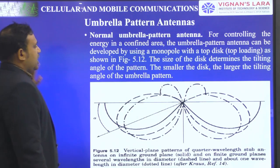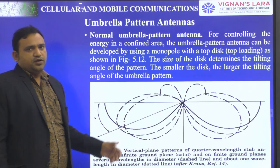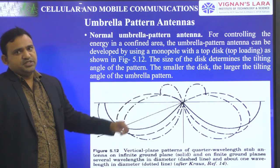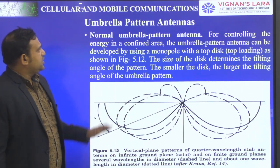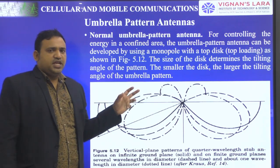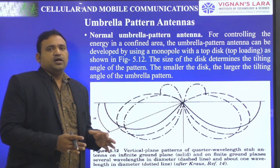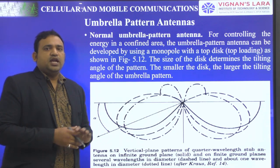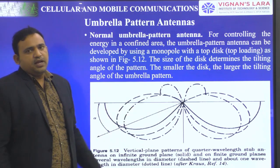Next one: umbrella pattern antennas. You know how an umbrella looks — it will cover only one specific region. A normal umbrella pattern antenna is used for controlling the energy in a confined area. If you want to confine the antenna signal to one specific location, we will use umbrella pattern antennas.